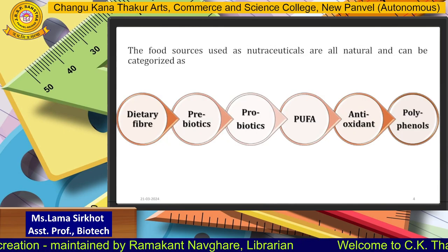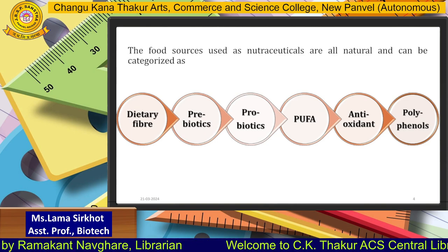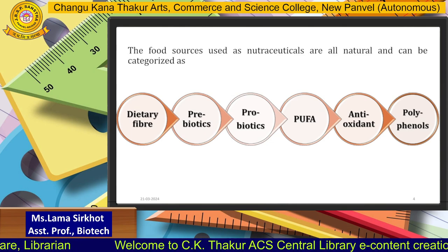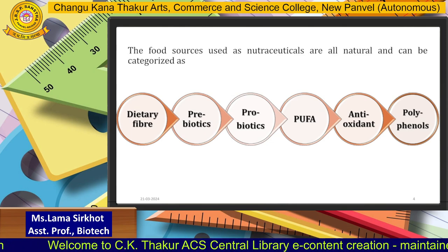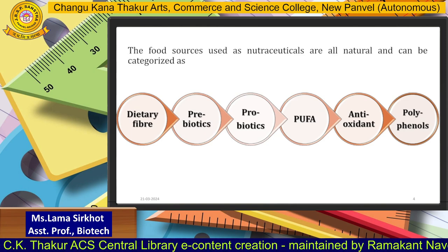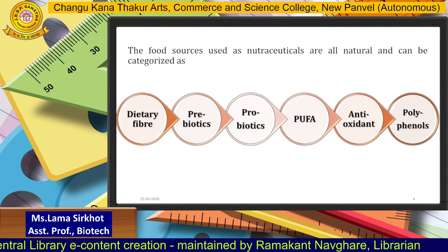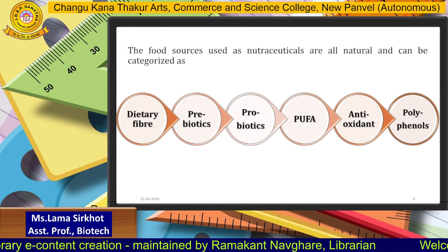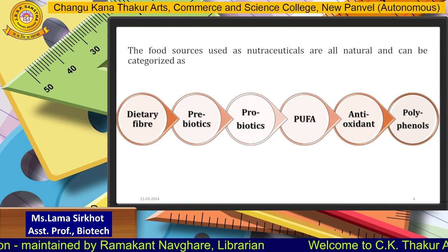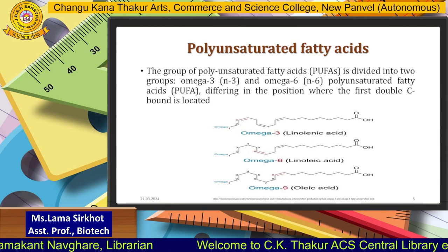Food sources used as nutraceuticals are all natural and can be categorized as: 1. dietary fiber, 2. prebiotics, 3. probiotics, 4. polyunsaturated fatty acids or PUFA, antioxidants, and polyphenols. The first three — dietary fiber, prebiotics, and probiotics — have been dealt with by Ms. Rupali Nanekar, so I will be continuing with PUFA, antioxidants, and polyphenols.